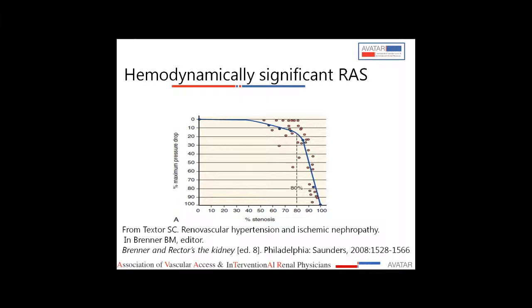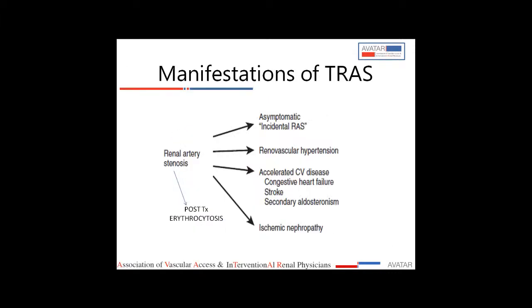The manifestations of TRAS are similar to those of native renal artery stenosis. They can be asymptomatic, detected on routine Doppler or MR screening. They can present as renovascular hypertension — typically accelerated or paroxysmal hypertension refractory to medications. They can present as accelerated cardiovascular disease with recurrent episodes of congestive cardiac failure, stroke, or secondary aldosteronism with refractory hypertension, hypokalemia, and metabolic alkalosis. They can also present with ischemic nephropathy and progressive deterioration of graft function.